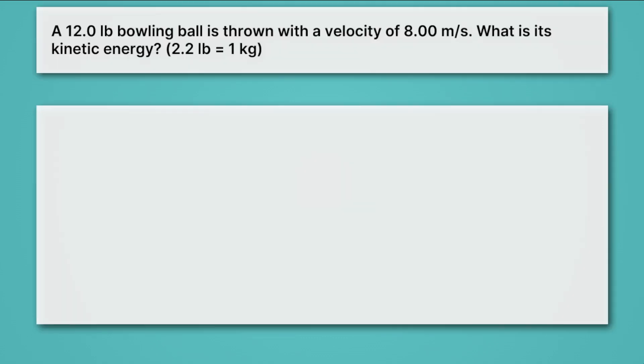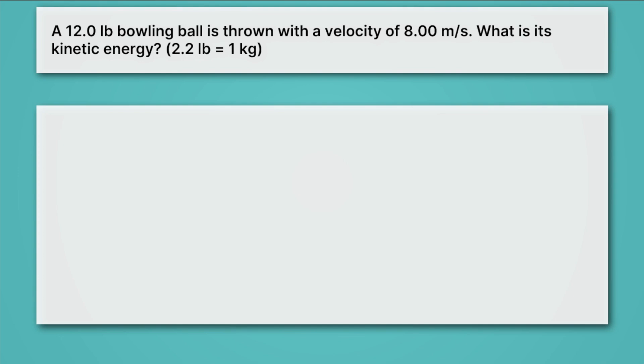Let's apply this equation to actually calculate the kinetic energy of a bowling ball. This problem says a 12 pound bowling ball is thrown with a velocity of 8 meters per second. What is its kinetic energy? Well, let's start by writing the variables we've been given. We've been given the mass of the bowling ball, and we're told that it's 12 pounds.